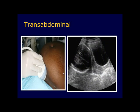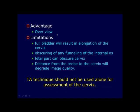With the transabdominal technique, the cervix is examined through a full urinary bladder using a 3.5 to 5 MHz transducer, scanning in the midline along the longitudinal axis of the cervix. While this technique gives an overview, it does not have sufficient reliability because the full bladder results in elongation of the cervix and obscuring of any funneling of the internal os. Fetal parts may also obscure the cervix, especially after 20 weeks, and distance from the probe degrades image quality. Therefore, transabdominal technique alone should not be used for cervical assessment.